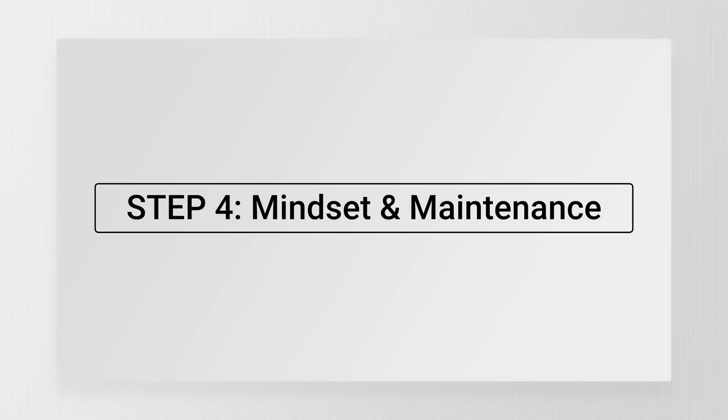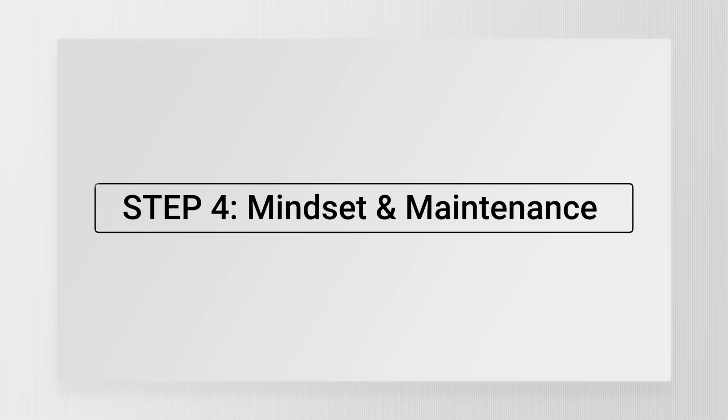So step three is not about building modules — it's about building independent modules that talk to each other through interfaces. Now we've got one more step. And this is the step that most people skip — because you can have clean names, tidy modules, even nice interfaces, but if you don't get this last step right, it all falls apart over time. Step four is about mindset and maintenance — the discipline that keeps your projects clean, not just on day one, but for years to come.